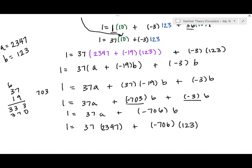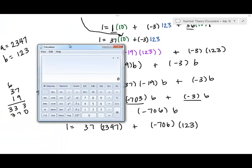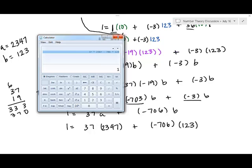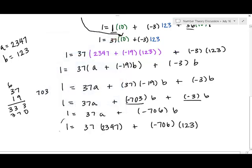Let's check it with our calculator and make sure that this is correct. Otherwise we have to drag it. That's okay. You're going to mess up. This is good. It's just arithmetic. We can check it and make sure that we're right. 37 times 2347 minus 706 times 123. Phew! Good. We've done it. We've written 1 as a linear combination of 2347 and 123.